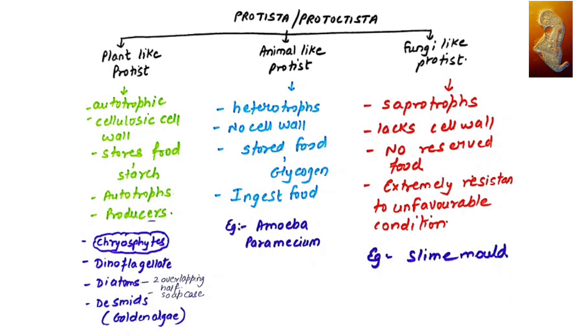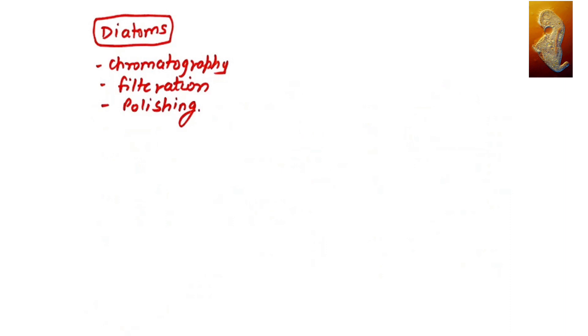When you talk about diatoms, what are the functions of diatoms? They are used for chromatography, which is the method of separating compounds based on their molecular weight. They are used for filtration to filter certain liquid stuff. Diatoms are also used for polishing.